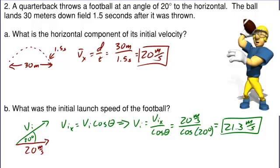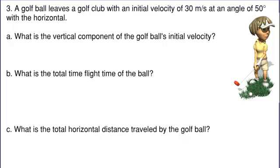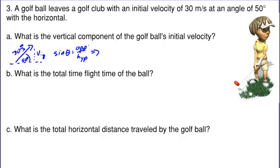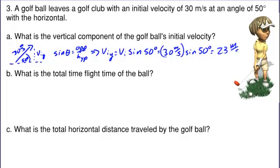Let's try two more, a little more involved. A golf ball leaves a golf club with an initial velocity of 30 meters per second at an angle of 50 degrees with the horizontal. What is the vertical component of the golf ball's initial velocity? We use the sine function, making a right triangle. Since sine theta equals opposite over hypotenuse, vi y equals vi times sine 50 degrees, or 30 meters per second times the sine of 50 degrees, which is 23 meters per second.